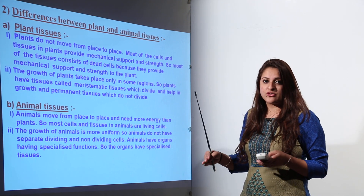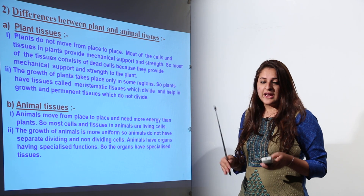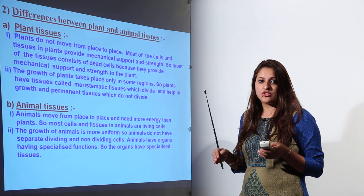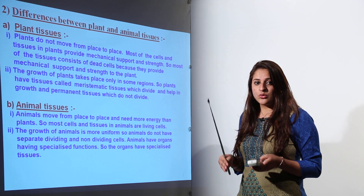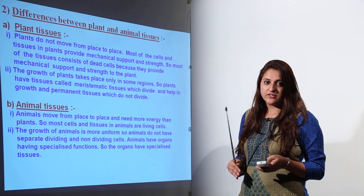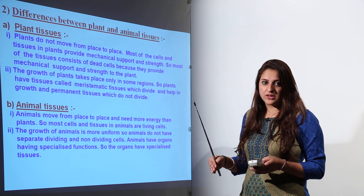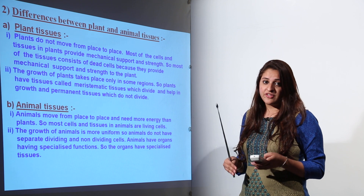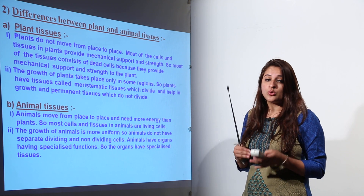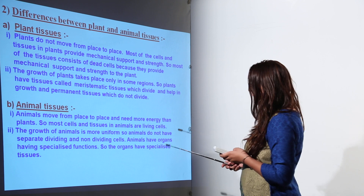In animal tissues, they have to move from one place to another. Muscle tissue is involved in contraction and relaxation so that a person, animal, or human being can move from one place to another. Therefore, muscle tissue consists of living cells — they are not dead cells.